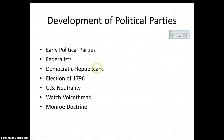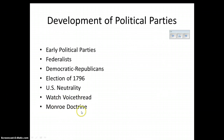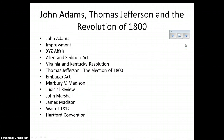The election of 1796 was the first real election in American history — the first time two political parties actively competed for the presidency. John Adams wins this election. Adams has to deal with foreign affairs as well, specifically impressment. This time he has to deal with it with France. When the Federalists are in power, France is the enemy; when the Democratic-Republicans are in power, England is seen as the enemy. They have very different views on the two countries.